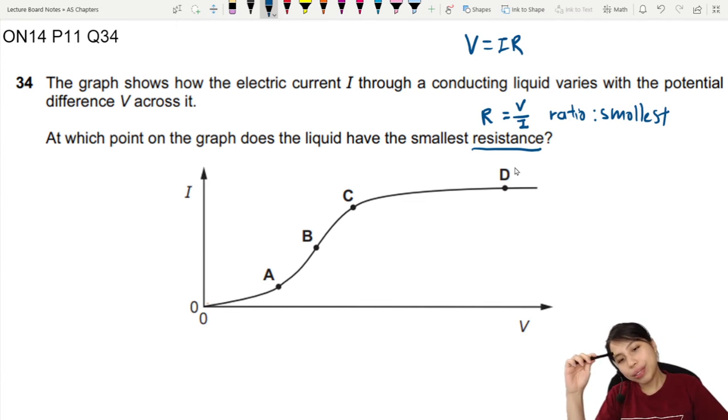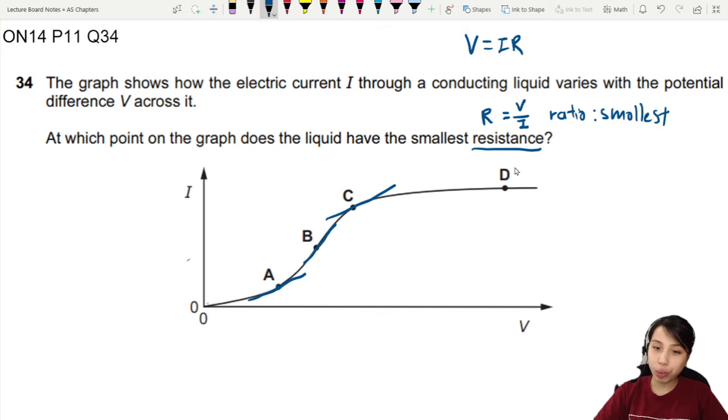Now your first impression might be to think we can just draw a tangent to the point, find the gradient of the curve at those points, and just see which one is the smallest or the largest. So maybe you might choose B or D. But let me tell you, if you chose D, for example, or if you chose B and say it's so steep, both of these answers are wrong.